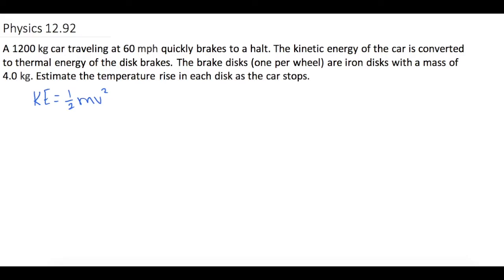So we have 1200 kilograms as our mass, so that's good. And then for the velocity, we have 60 miles per hour, which is not SI units, and we want meters per second. So we know in one hour, there are 3600 seconds. So now hours cancel, and now we have miles per second.